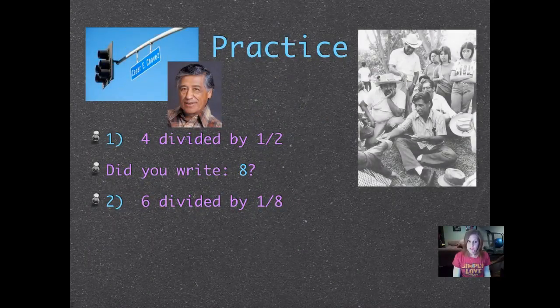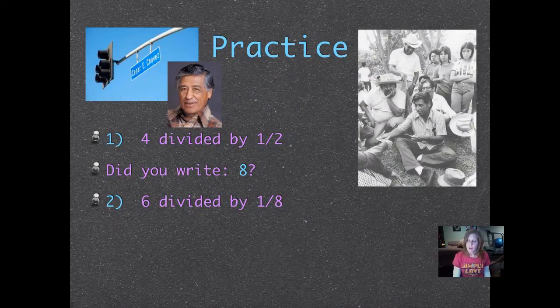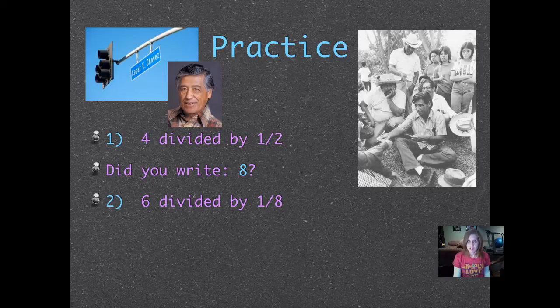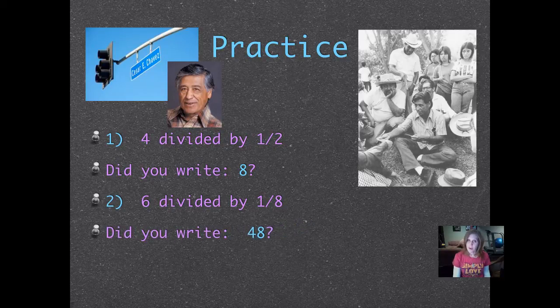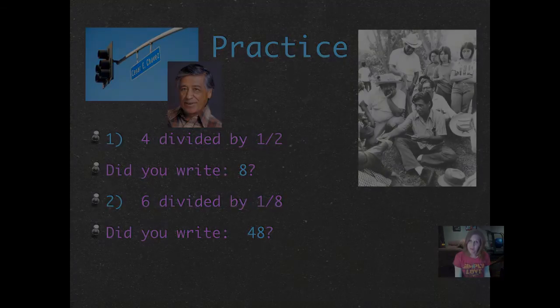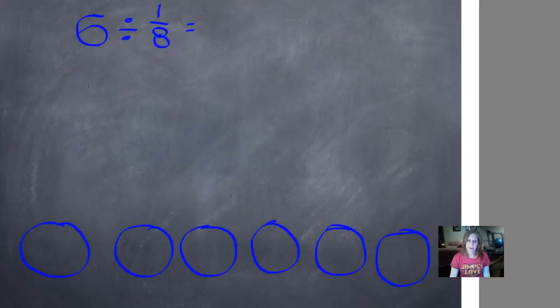Number two: six divided by one-eighth. Pause it and push play when you finish. Did you write 48? Let's work that one. Six divided by one-eighth can be rewritten as six over one times the reciprocal of one-eighth, which is eight over one. And now we multiply: six times eight is 48, one times one is one, improper fraction, so 48 divided by one is the whole number 48.